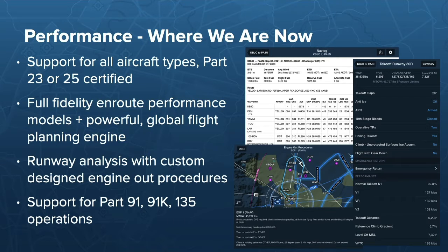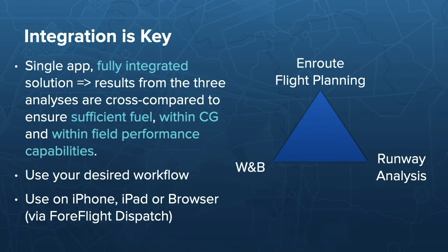A quick overview of where we're at right now: we support Part 25 and Part 23 certified aircraft — the whole spectrum. We have full-fidelity en route performance capability in terms of models, routing, and filing. We support runway analysis with custom engine-out procedures designed in-house. In terms of operations, we support all standard operations you'd expect: 91, 91K, and 135. The key is integration — customers wanted a single-app solution, fully integrated, combining route flight planning, runway analysis, and weight and balance, all talking to each other.